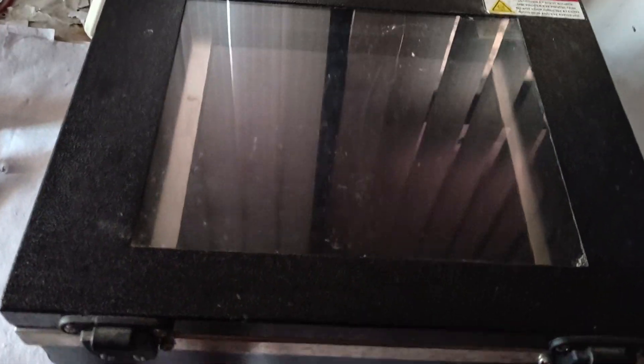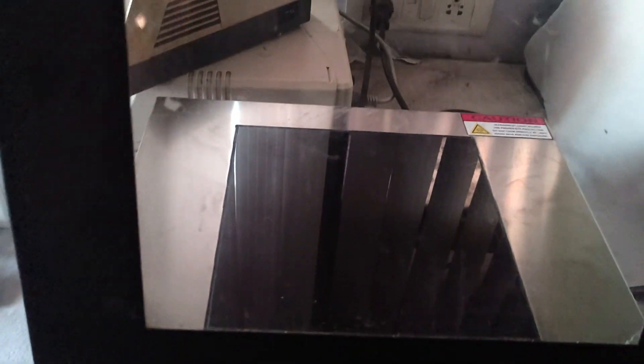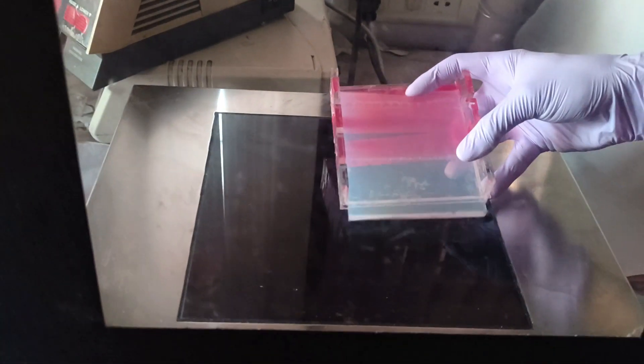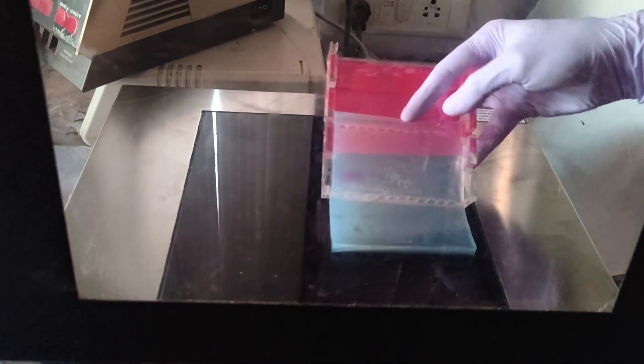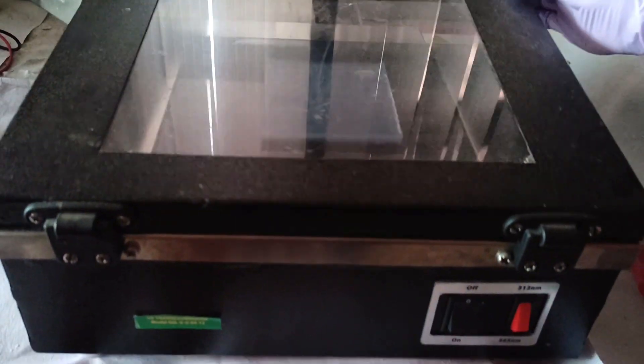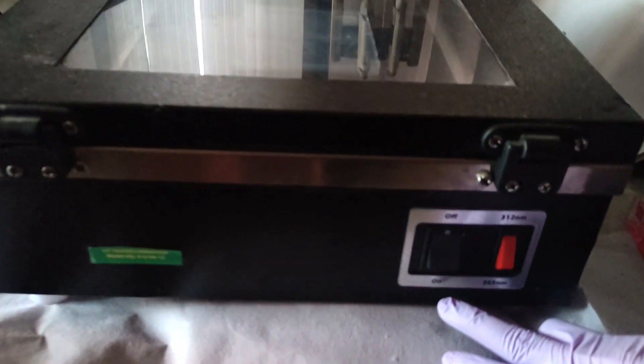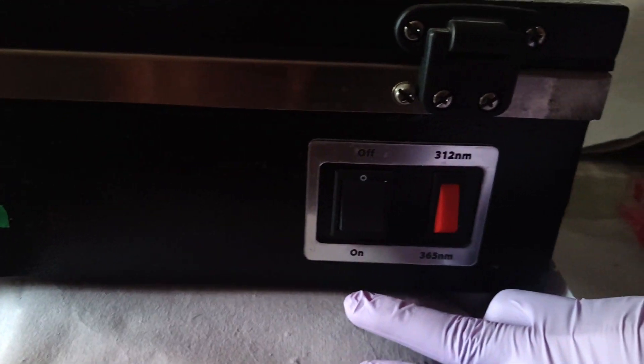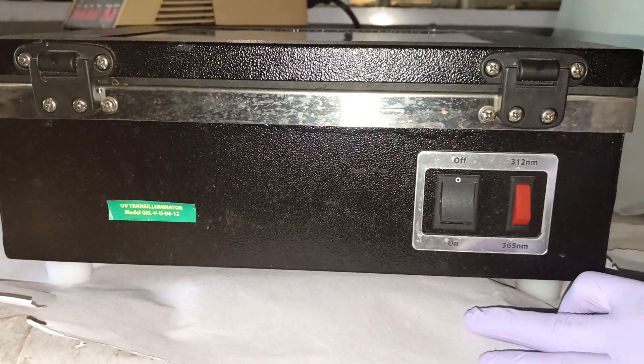Another way we can visualize the gel is by using a UV transilluminator. Switch off any external lights and place the gel on the UV transilluminator. It is very important to close the lid to avoid damage that may be caused by the harmful UV rays. Switch on the UV light.